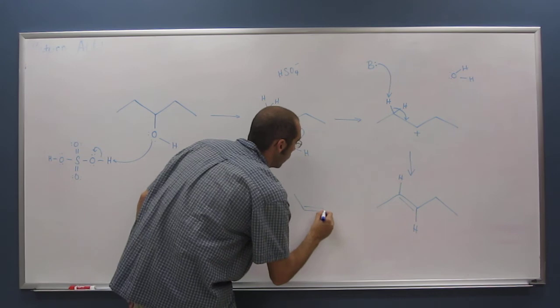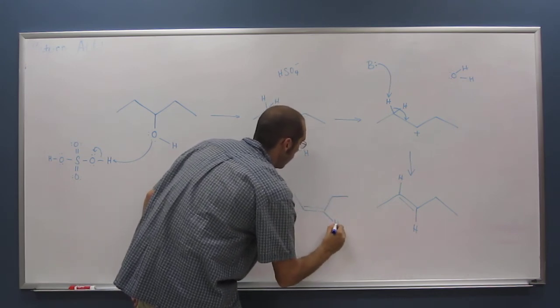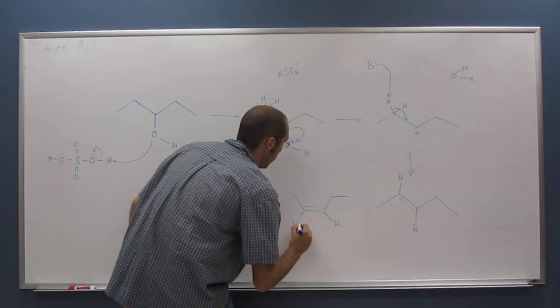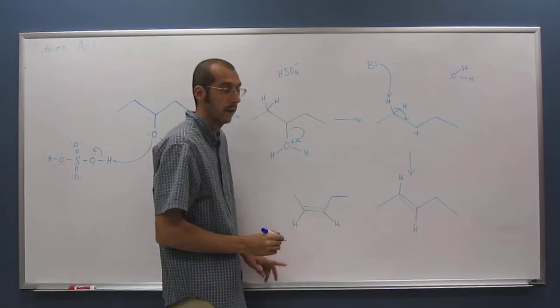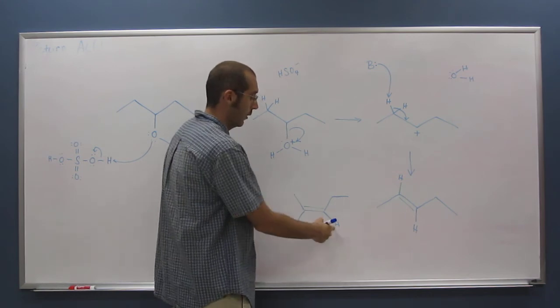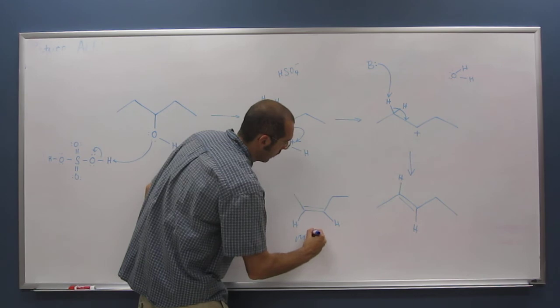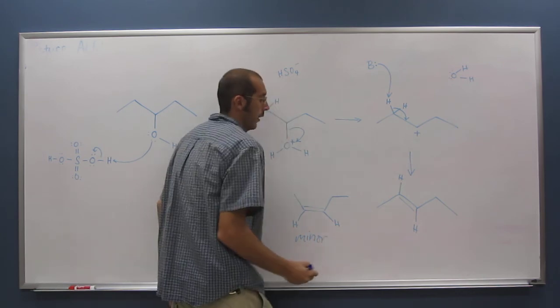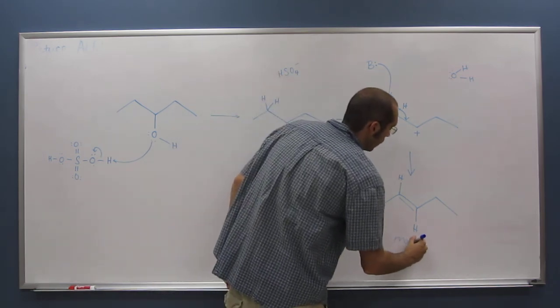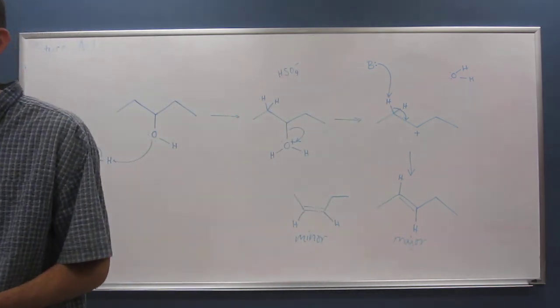So this isomer, which we do get as the minor product, we got the big group, big group on the same side, and the small group, small group on the same side. So this is going to be the minor product, and this is going to be the major product due to that interaction.